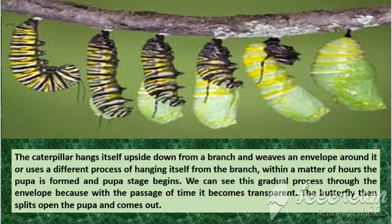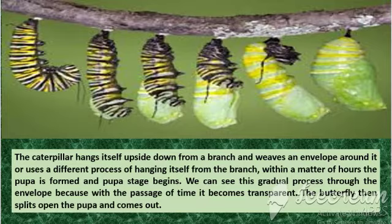Then comes the time for the caterpillar to rest. The finger-long caterpillar hangs itself upside down from a branch and weaves an envelope around it, or uses a different process for hanging itself from the branch. Within a matter of hours, a chrysalis is formed and the pupa stage begins.